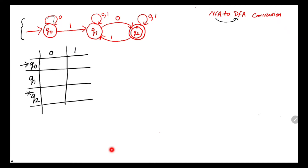Now we'll fill the transition table. q0 with 0: the next state is q0. q0 with 1: the next state is q1. Next, q1 with 0 goes to both q1 and q2, so we write {q1, q2}, enclosed in parentheses to denote that this is a set.